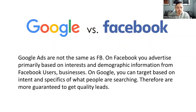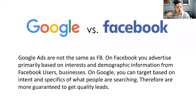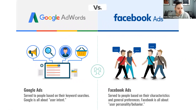Google versus Facebook: Google ads are not the same as Facebook. On Facebook, you advertise primarily based on interests and demographic information. On Google, you target based on intent and specifics of what people are searching — you're more likely to get quality leads. Facebook is a social platform where people say what they like, but it doesn't capture search intent. Google serves ads to people based on their keyword searches.